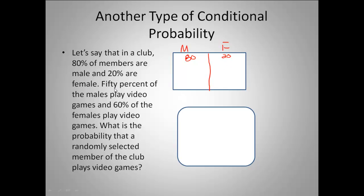50% of the males play video games and 60% of the females play video games. The question is: what's the probability that a randomly selected member of the club plays video games? You might think you just add 60 and 50, but that would put you over 100, and the male and female groups are not split evenly. So we're going to think through this using numbers first.